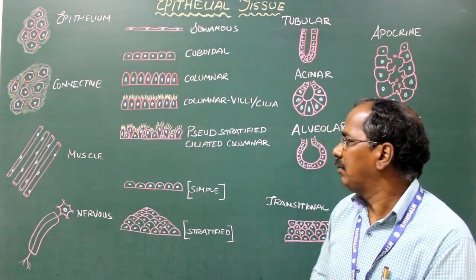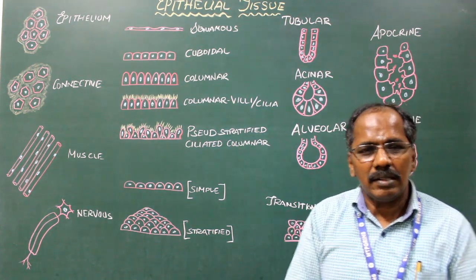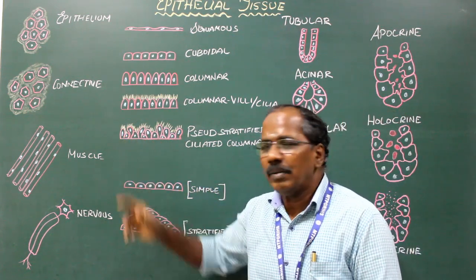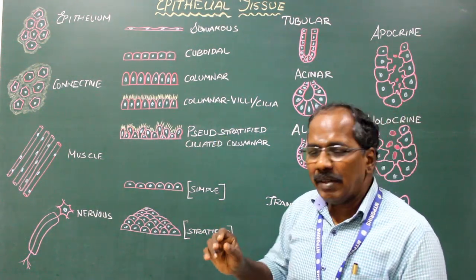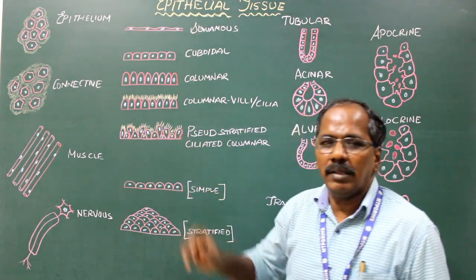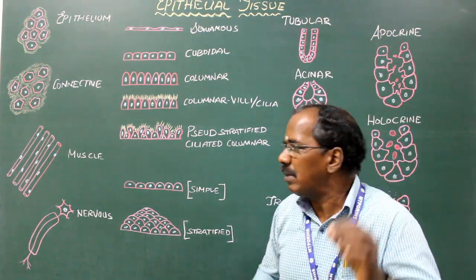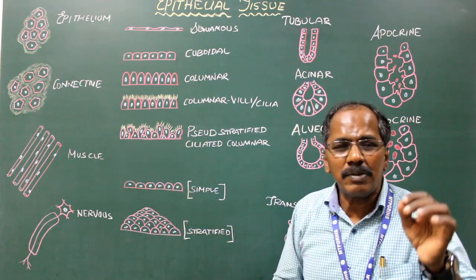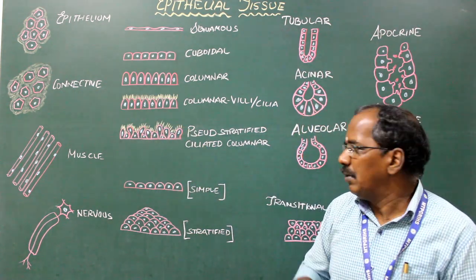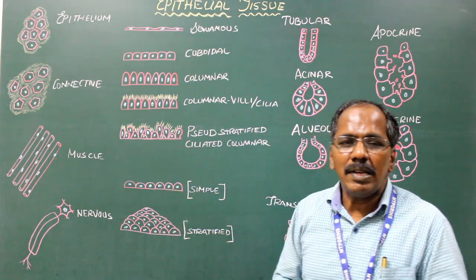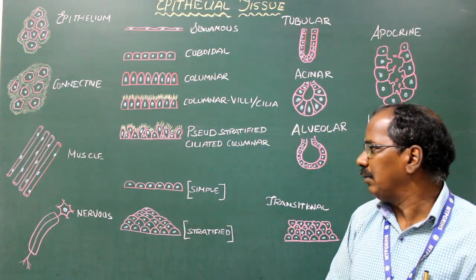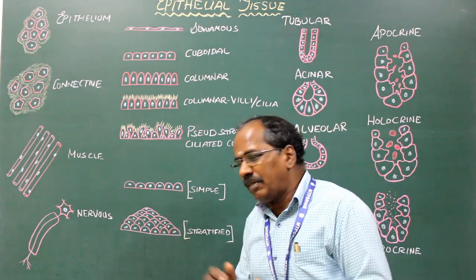Pseudostratified ciliated columnar epithelium is actually a single layer of cells attached to the basement membrane. Some cells are long and thin, some are short and thin, giving a false appearance of two layers — hence the name pseudostratified. The superior surface is lined by cilia. Example: trachea and primary bronchi.